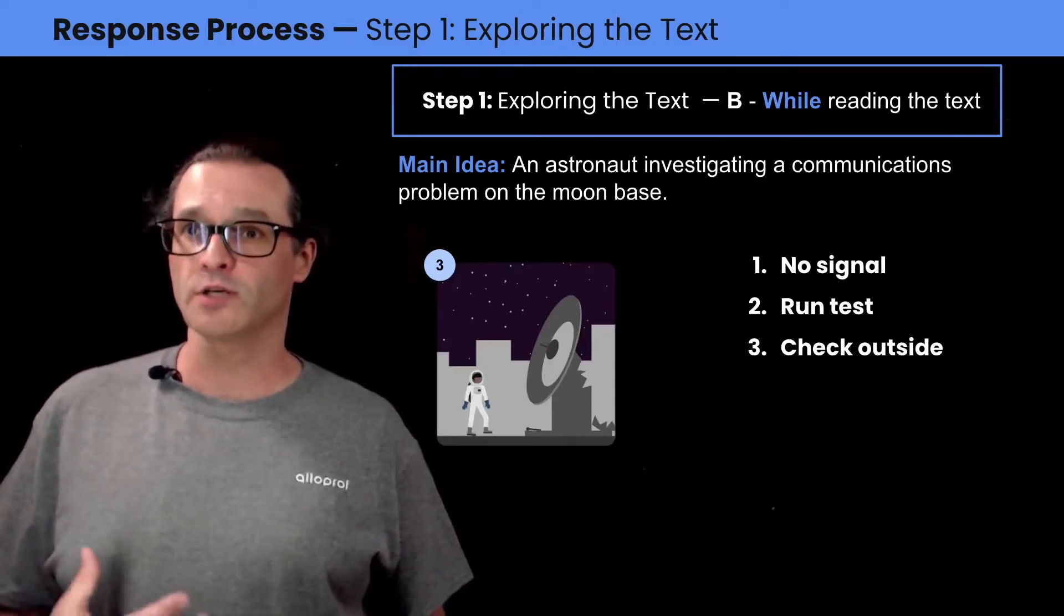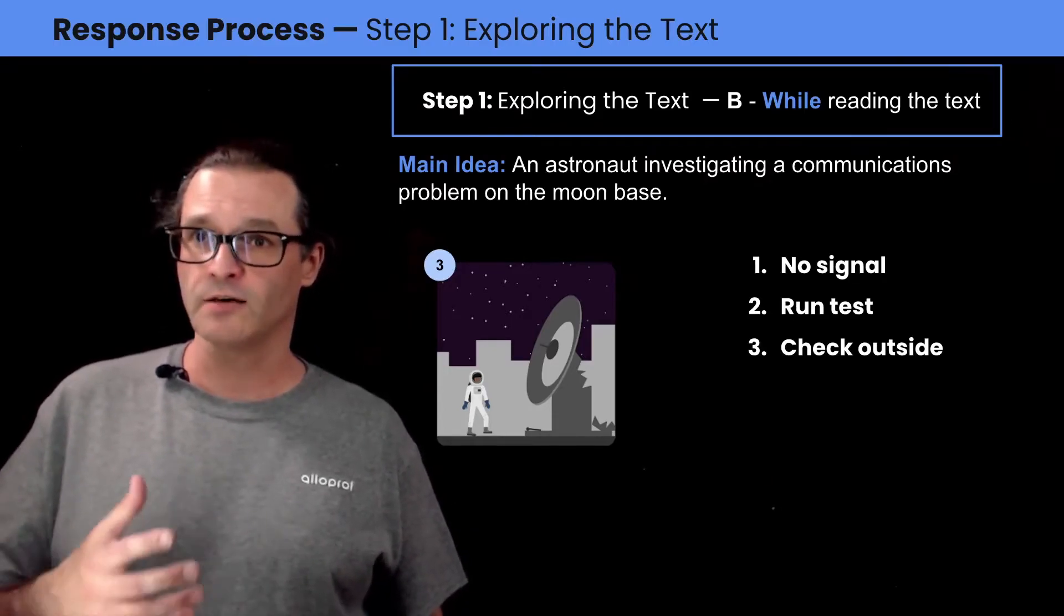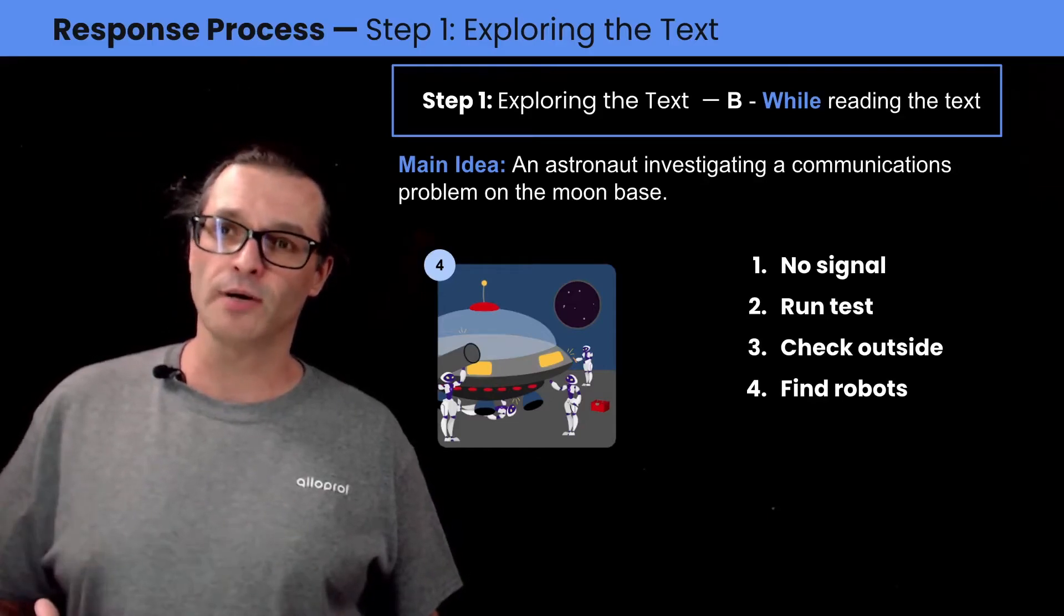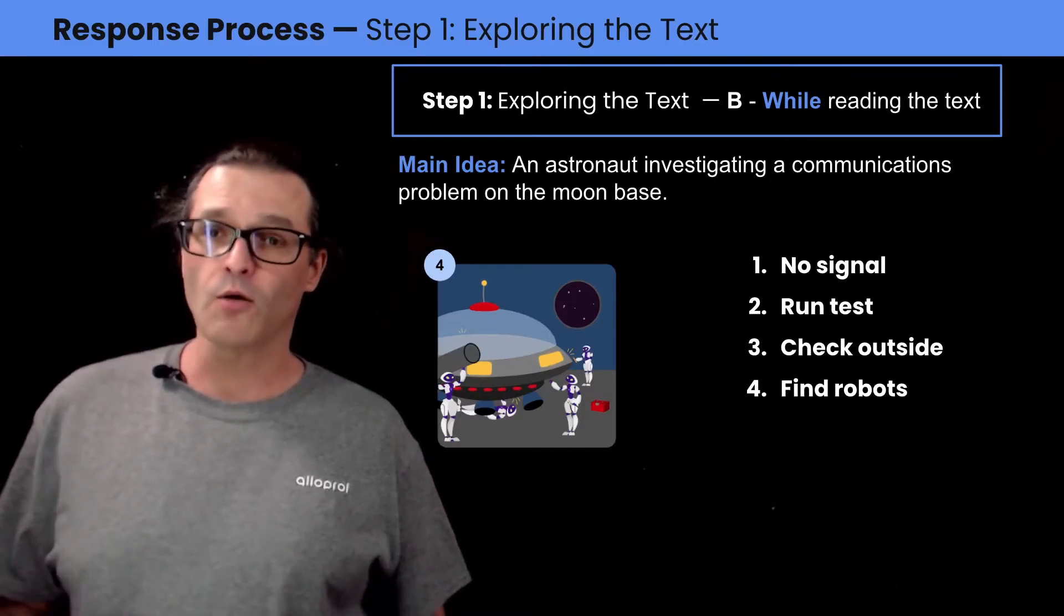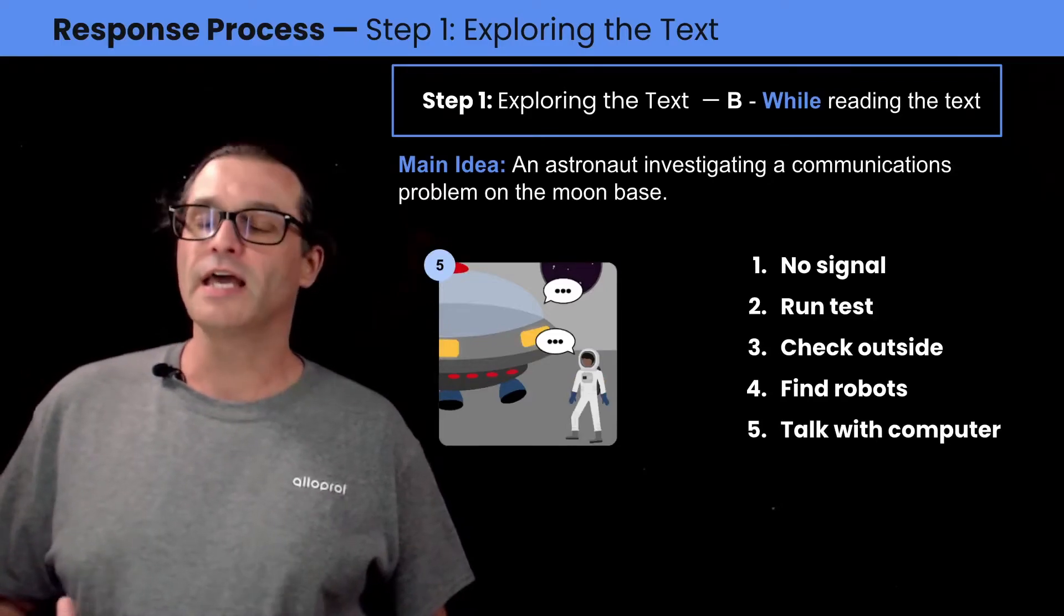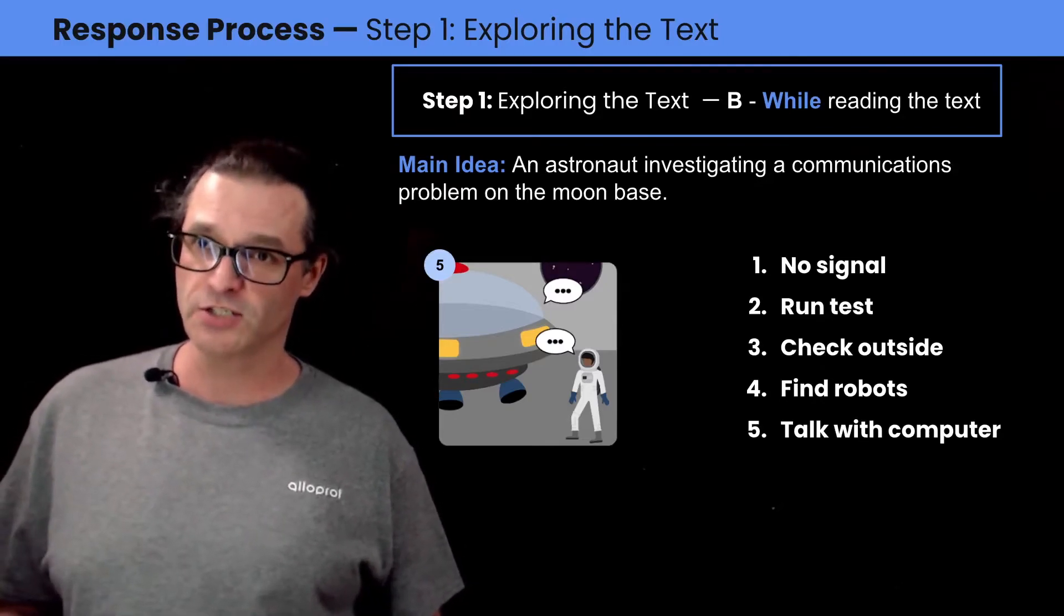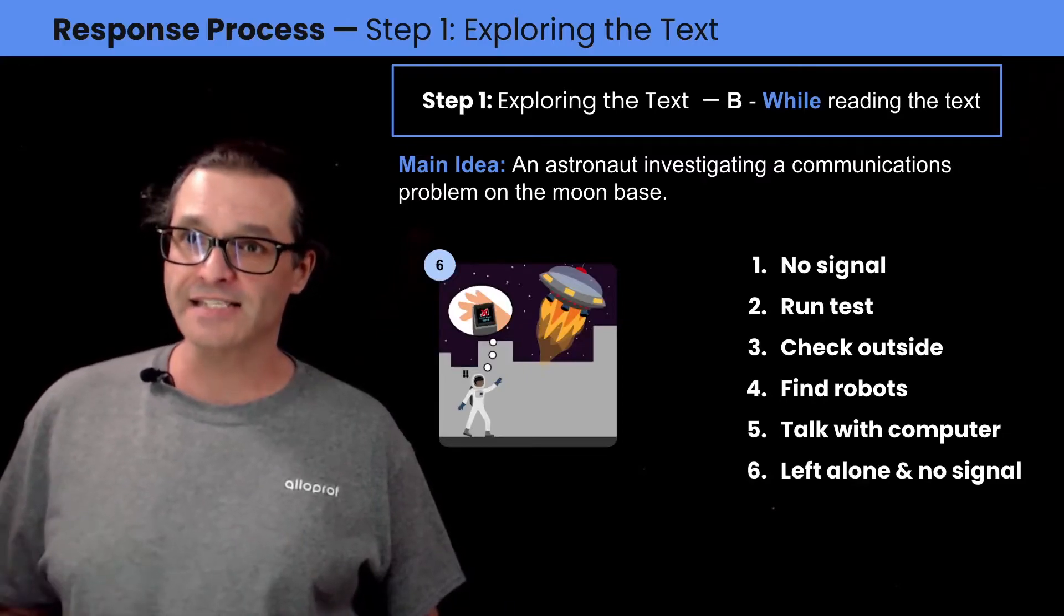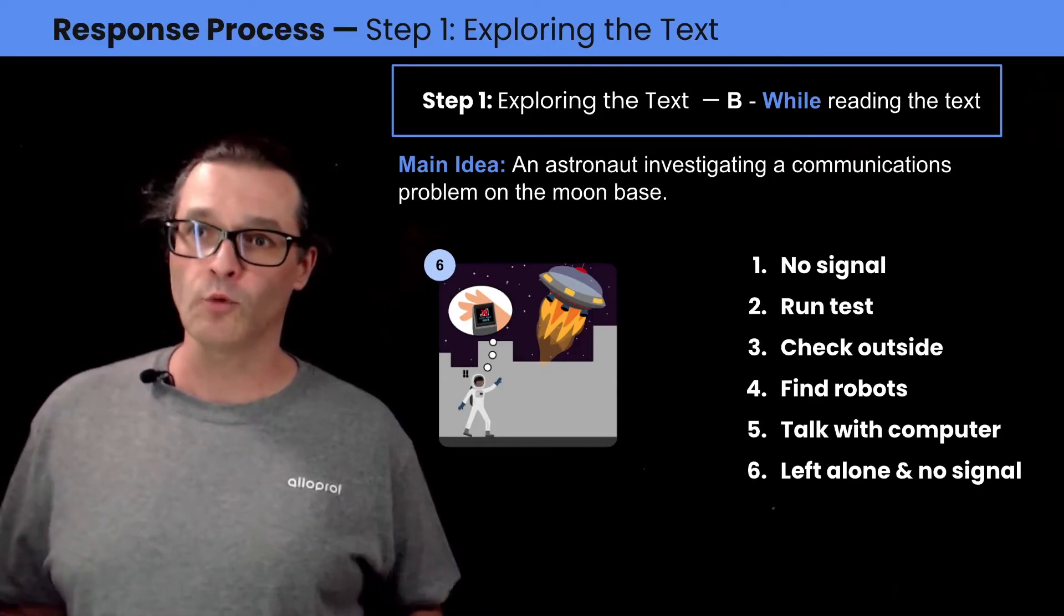The third element is astronaut Bob actually going outside to check out what the problem is. And this is where he finds the antenna with some damage on it and some tracks on the ground. The fourth story element is when astronaut Bob follows the tracks on the ground to the hangar behind the moon base. This is where he finds the robots working on the spaceship and he had no idea that this was going on. The fifth story element is when astronaut Bob and the computer Jason, now downloaded into the spaceship, have a conversation and the computer tells astronaut Bob that he's leaving. The sixth and last story element is Bob being left alone on the moon base and with still no way to communicate with the outside world.